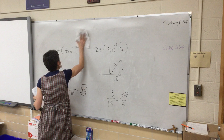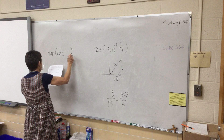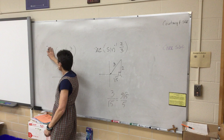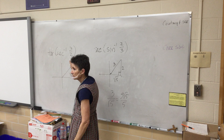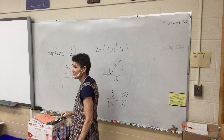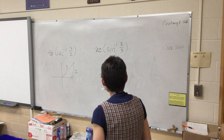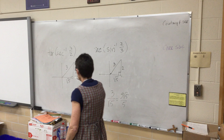For tangent of inverse cosecant (3/2): another positive value, drawn in quadrant 1. Cosecant is the reciprocal of sine, so hypotenuse is 3 and opposite is 2. Finding the missing side gives root 5. The tangent is opposite over adjacent, which is 2 over root 5.